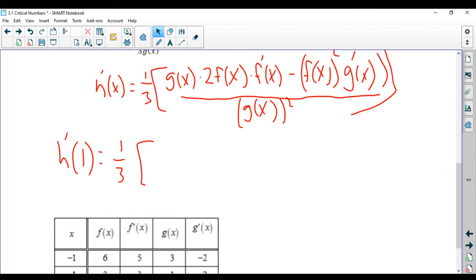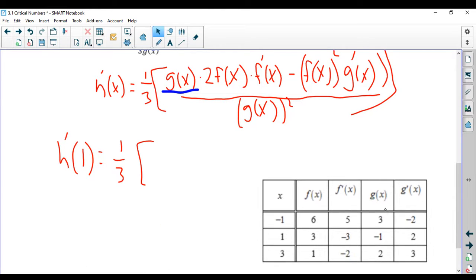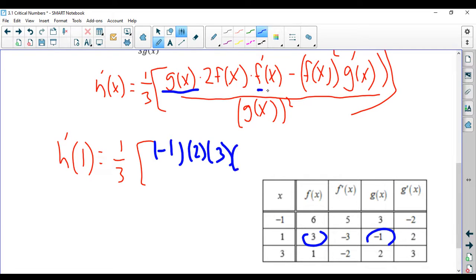So first we have g of 1. According to the table, g of 1 is equal to negative 1 right here. So negative 1 times 2 times f of 1. f of 1 is right here. It's 3 times f prime of 1, which is right here, negative 3.